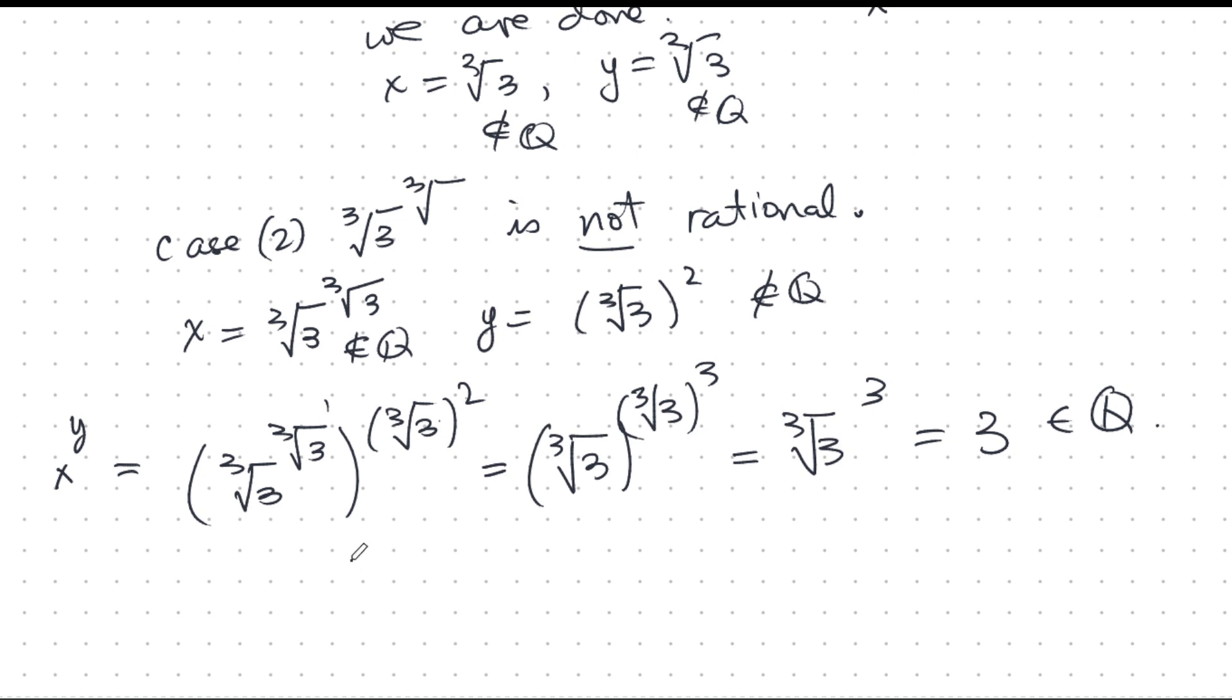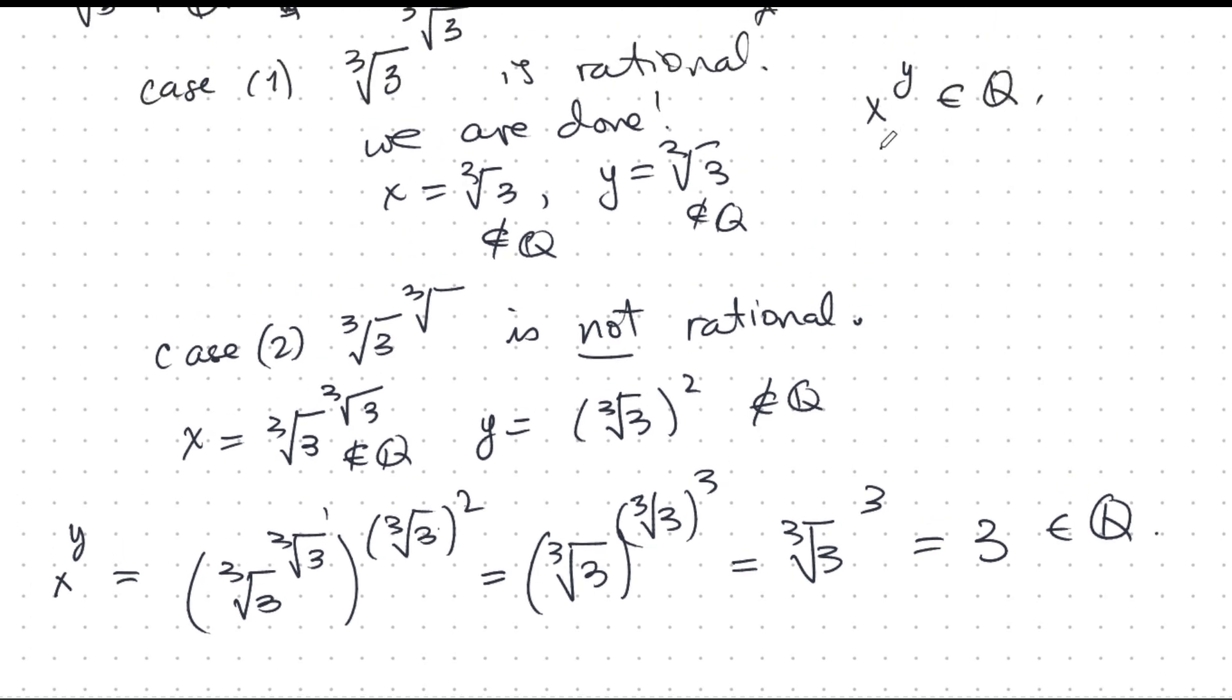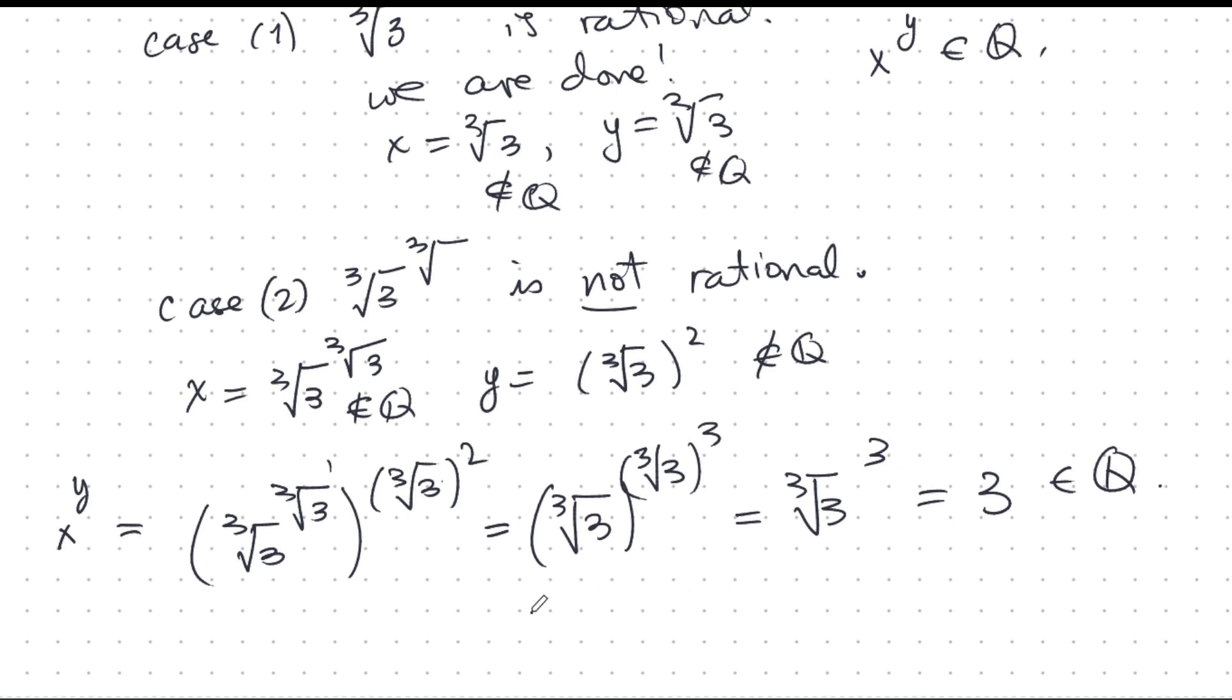But we don't know which one. We still don't have an example of which one. This proof doesn't tell us. We would have to appeal to some much more sophisticated stuff if we want to go and answer which case is actually true. Is it 1 or 2? I think you can answer this question, but it requires some much more sophisticated theorems.